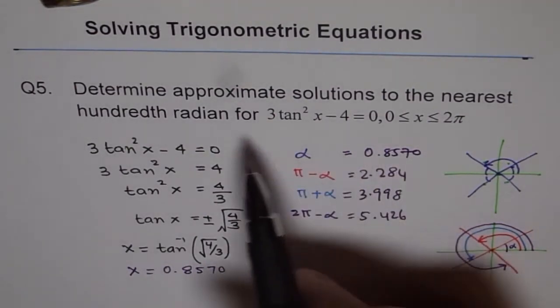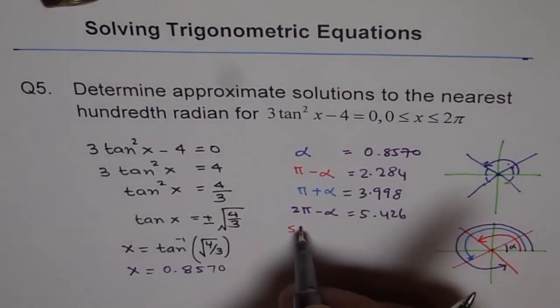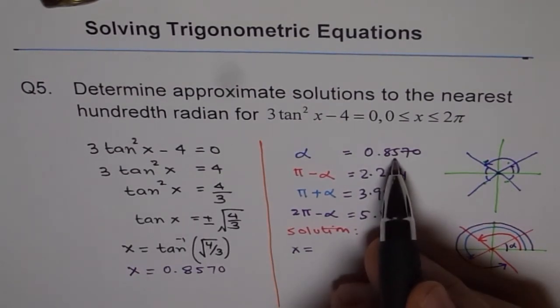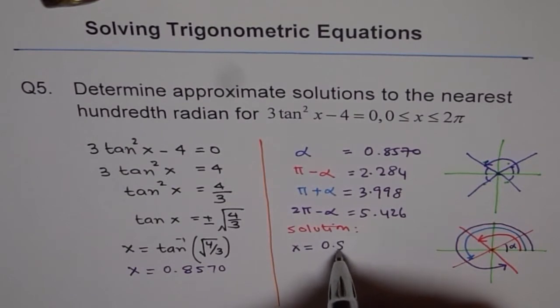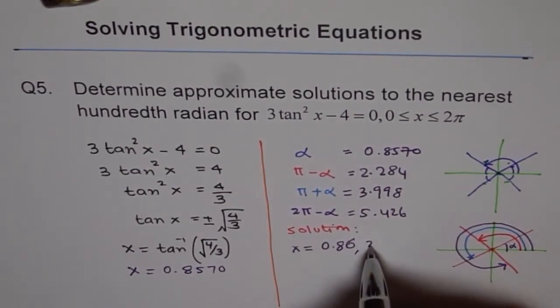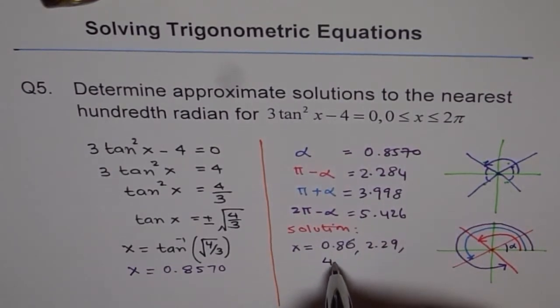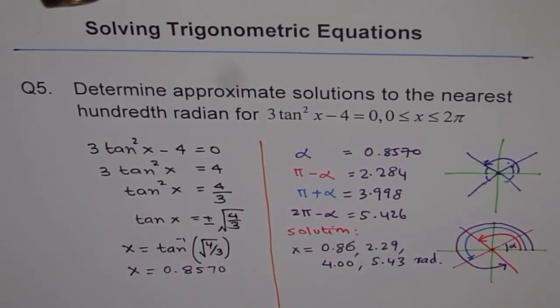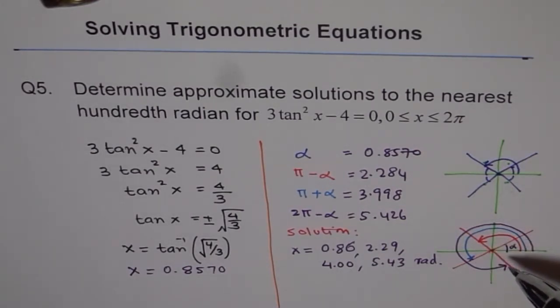Since we need to approximate them to hundredth radian, we say our solution is, let me draw a line here separating the work we did and the solution. Rounding to hundredth places, making it 2 decimal places: x equals 0.86, 2.29, 4.00, and 5.43. These are all in radians. So these are our answers for x in radians. My point here is don't forget to give all possible solutions. There are four solutions for this. Use your calculator to calculate, but while you are calculating π plus minus alphas, you have to use four decimal places and then round them to 2. Thank you.